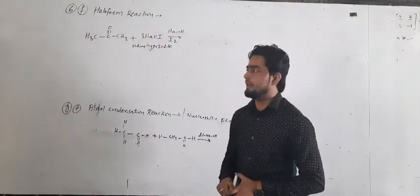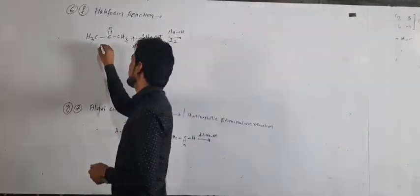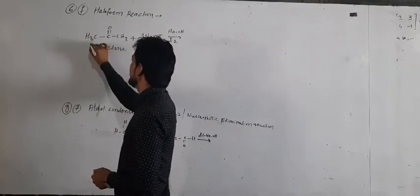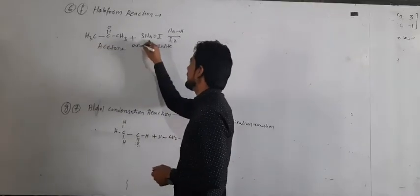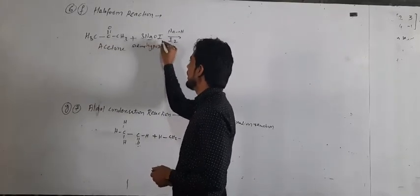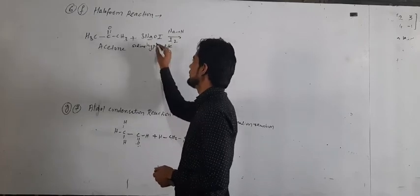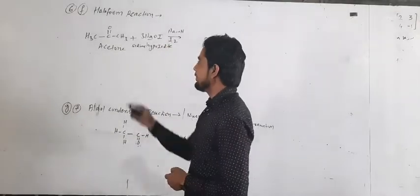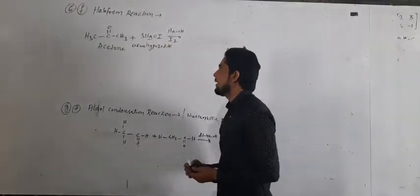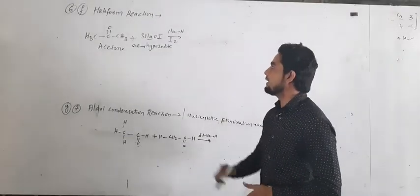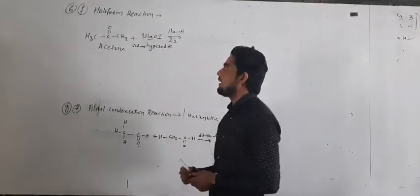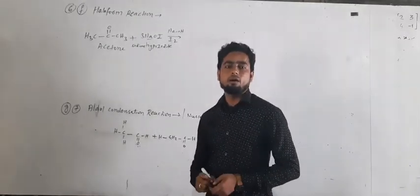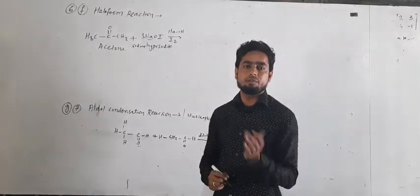Now what we take in the reactions — when acetone, that is CH₃COCH₃, reacts with NaOI called sodium hypoiodide, with 3 molecules of NaOI — so when acetone reacts with sodium hypoiodide in presence of sodium hydroxide and iodine, it forms the iodoform and also a compound which has fewer carbons remaining.